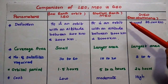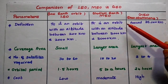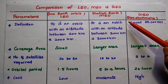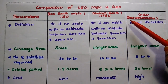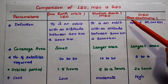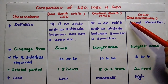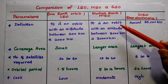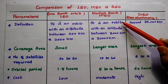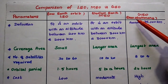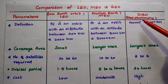Dear students, now we are going to discuss the comparison of satellite orbits. There are three types: low earth orbit, medium earth orbit, and geostationary orbit.